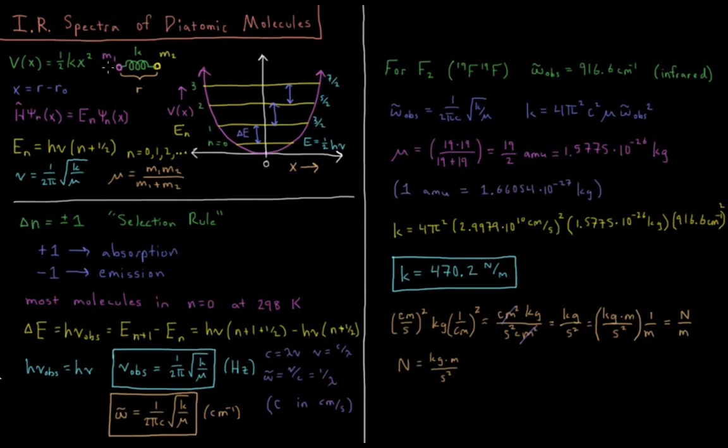For the harmonic oscillator model, we have two atoms with mass 1 and mass 2 connected by a covalent bond. The strength of that covalent bond is measured by a spring constant k, which specifies our potential energy function V(x) equals one-half kx squared.